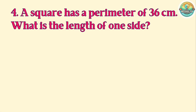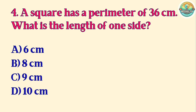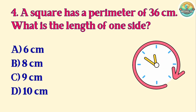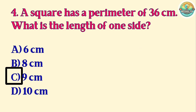Question 4. A square has a perimeter of 36 cm. What is the length of one side? A. 6 cm. B. 8 cm. C. 9 cm. D. 10 cm. Correct answer is C. 9 cm.